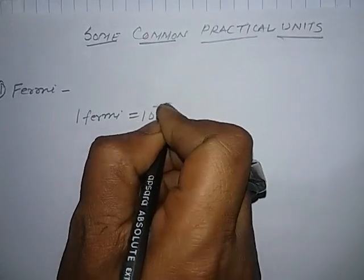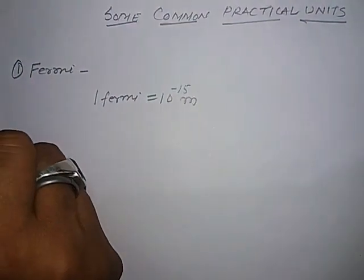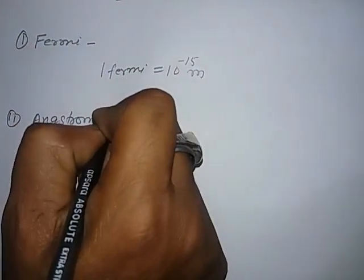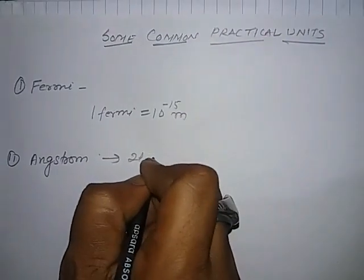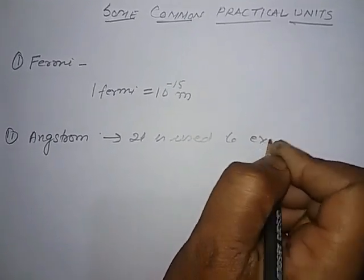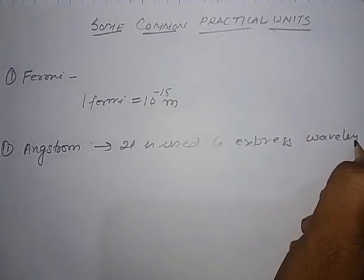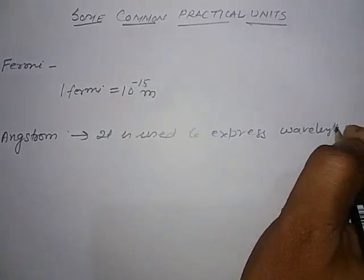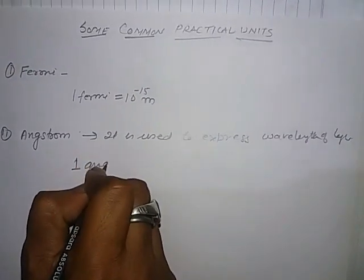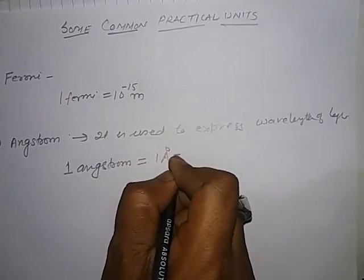express wavelength of light. One Angstrom equals 10 to the power minus 10 meters. Third one is Nanometer, which is used for expressing wavelength